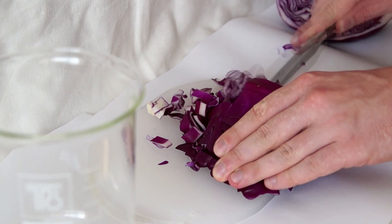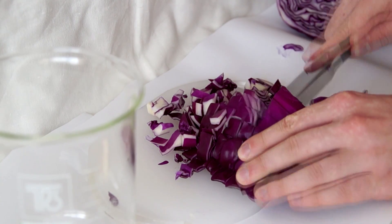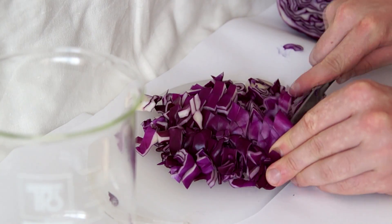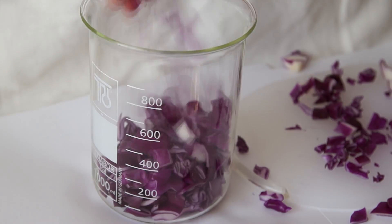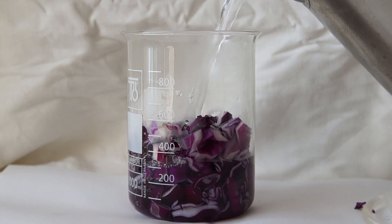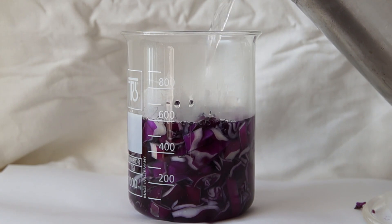To make the actual indicator, we need to extract purple pigment from the leaves. To do so, put the sliced cabbage in any container and fill it with boiling water. Then wait for about 20 minutes until most of the water-soluble substances appear in the solution.